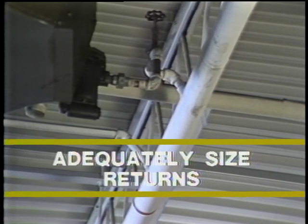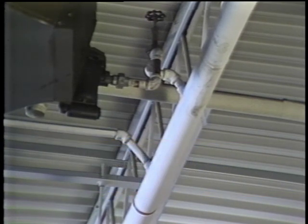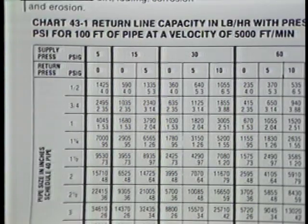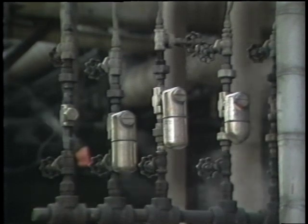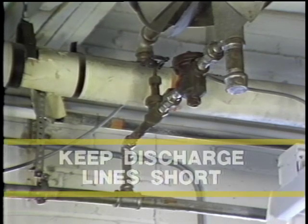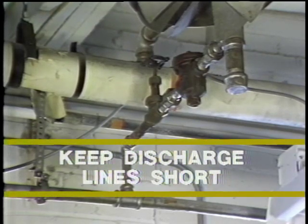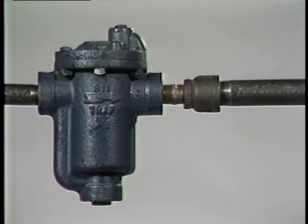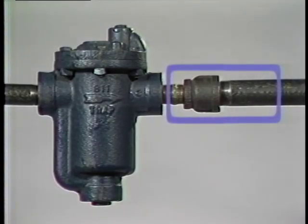Return lines must be adequately sized. Hot condensate discharging into the lower pressure of the return line produces flash steam. Return lines must be sized to handle this mixture of condensate and steam. If return lines are too small, high back pressures and excessive velocities will result. Excessive back pressure affects the operation of thermodynamic traps and reduces the differential pressure across all types of traps, thus reducing their capacity. High velocities in return lines increase the likelihood of differential shock and erosion. Keep discharge lines as short and straight as is practical. Assuming the trap to be properly sized for the application, use pipe the same size as the trap connection. If pressures to the trap are very low, increase the discharge line one pipe size.